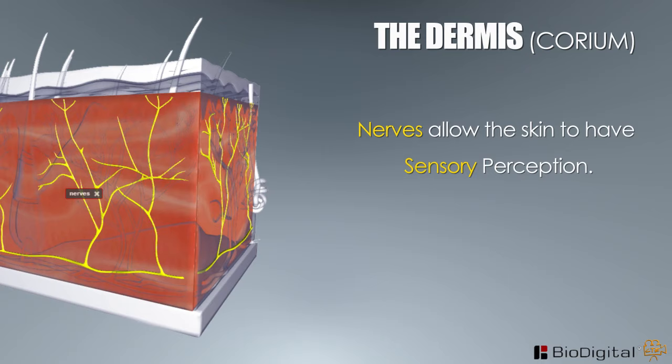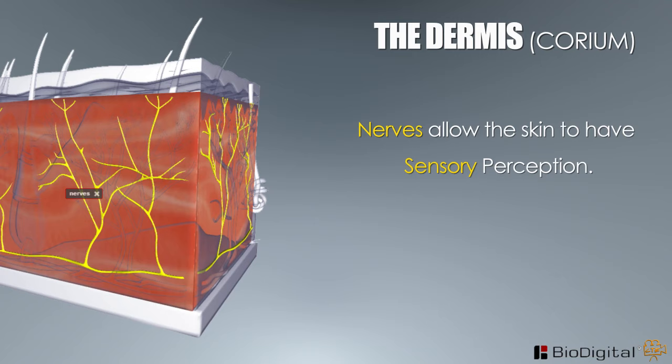Nerves allow the skin to have sensory perception. Through the skin, the body is able to respond to pain, pressure, temperature, as well as touch sensations.